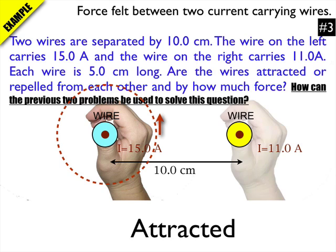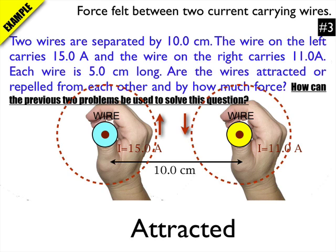The other wire is coming out of the screen as well. Using the right hand, thumbs in the direction of the current coming out of the page, and my fingers again showing the direction of the magnetic field, and that's going down in between the two wires.